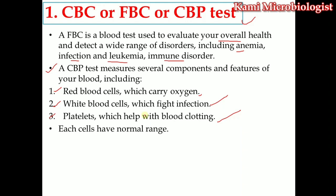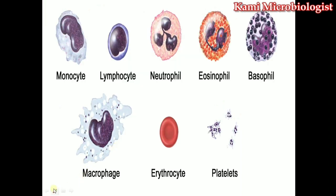In a complete blood count, what we mostly see and count includes monocytes, lymphocytes, neutrophils, eosinophils, basophils, macrophages, erythrocytes, and platelets. These are not real pictures, but if you look inside the microscope when you stain the slide, you will mostly find the monocytes at this shape. We mostly identify white blood cells by their nucleus. These are the monocytes — they have a large nucleus that can occupy a large area of the cell.